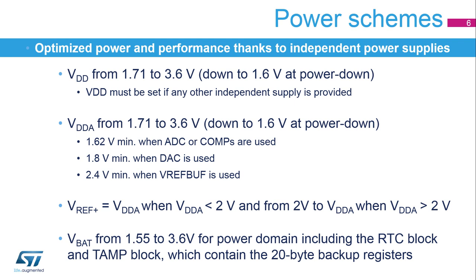The main power supply VDD ensures full feature operation in all power modes from 1.71 up to 3.6 volts, allowing it to be supplied by an external 1.8 volt regulator. Device functionality is guaranteed down to 1.6 volts, the minimum voltage after which a power-down reset is generated.